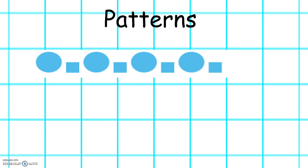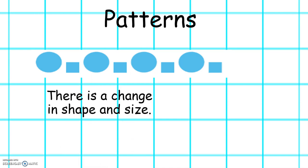Let's have a look at this pattern. Can you spot the change? There is a change in shape and size. In this pattern we have a large circle, small square, large circle, small square, large circle, small square, large circle, small square. What do you think the next 2 shapes will be? Excellent! Large circle, small square.